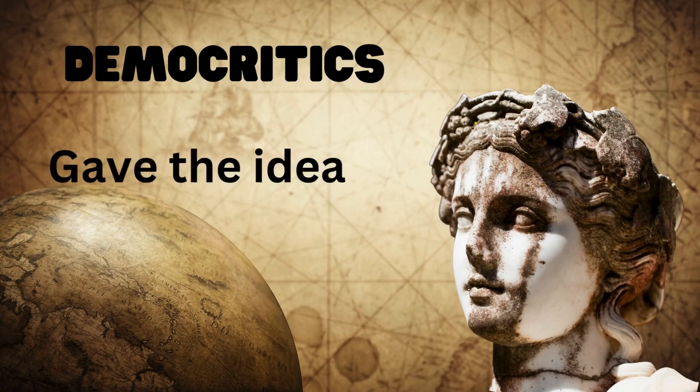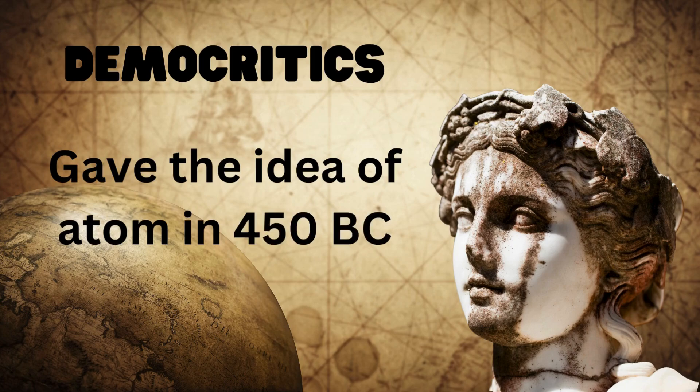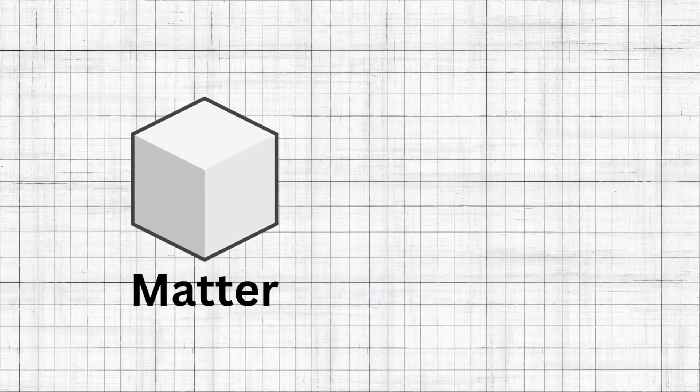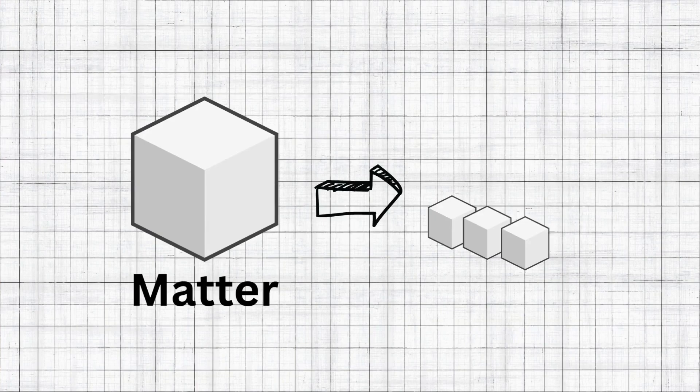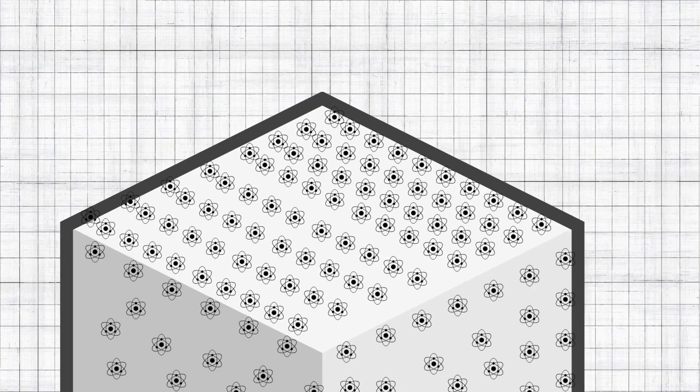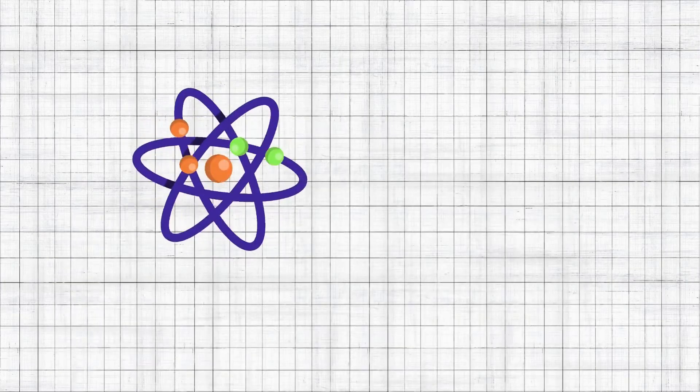Consider a piece of matter. Start breaking it into smaller pieces, and much smaller. And at the end, you reach a point where you can't further break it. So that's where Democritus called this unit 'atomos,' currently known as atoms.